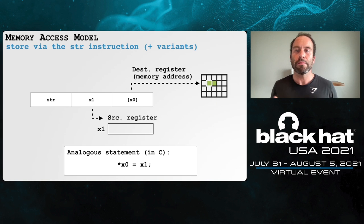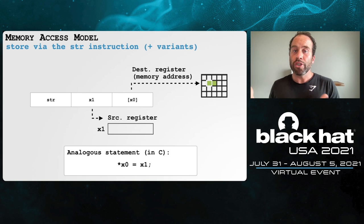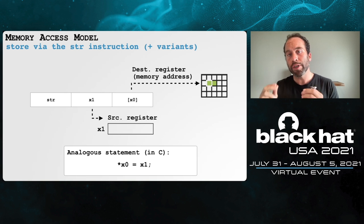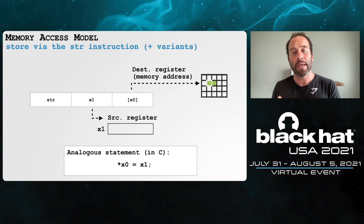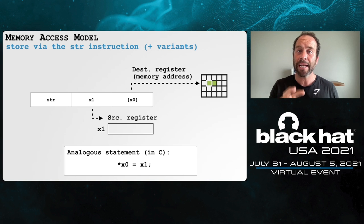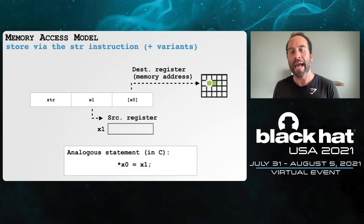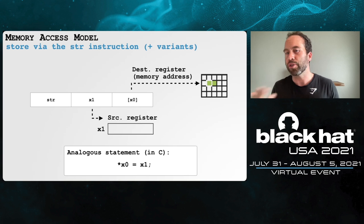The STR store instruction stores a value from a register into a specified memory address. Importantly, unlike most other instructions, the first operand is the source register. So STR X1, [X0] takes the value in X1 and stores it at the memory address specified in X0.